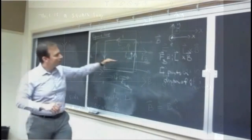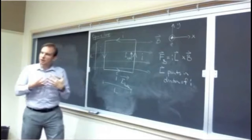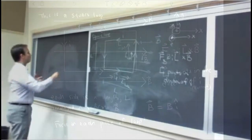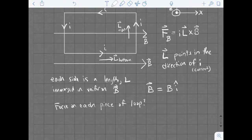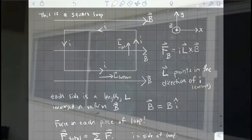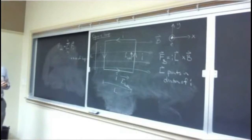We can start thinking about what the force looks like on each piece of this square loop, and the total force is just the vector sum of the individual forces on each of the four sides. So the total force is just the sum of the individual forces on each of the four sides of the loop.